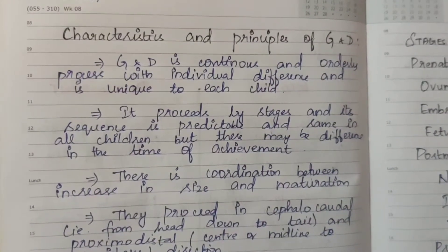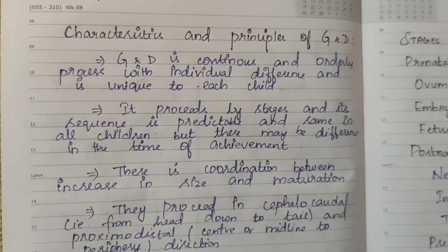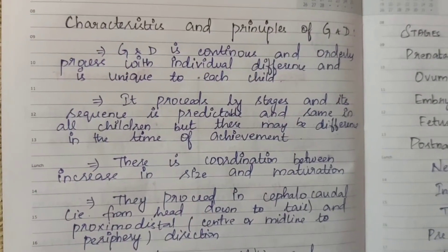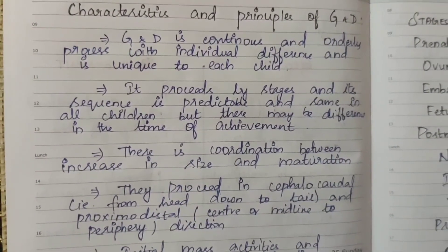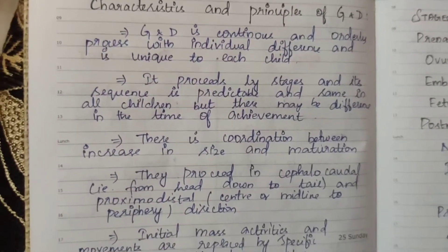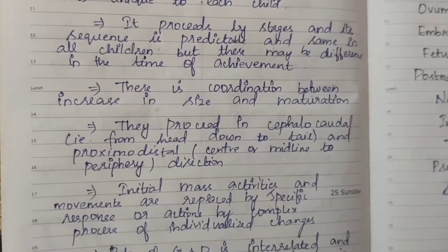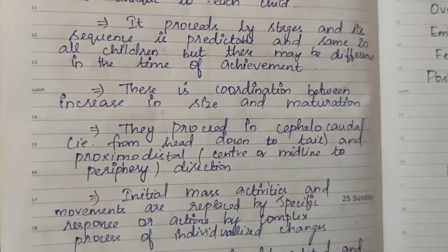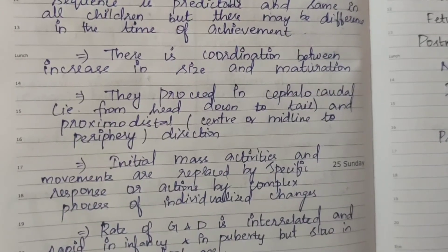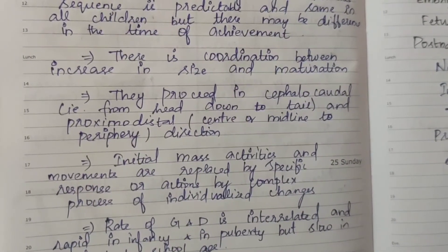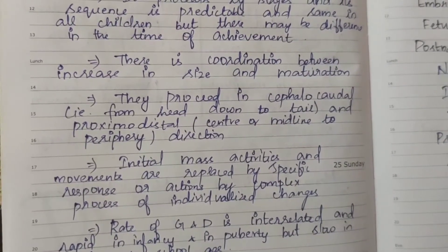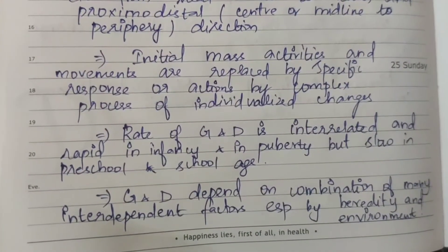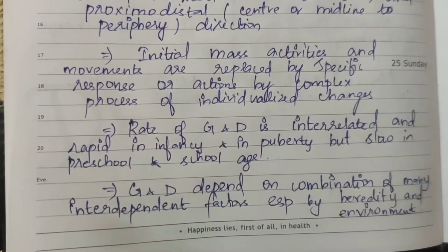Growth and development proceeds by stages and its sequence is predictable and the same in all children, but there may be a difference in the time of achievement. One child may attain a stage late, but the stage will be attained. There is coordination between increase in size and maturation. They proceed in cephalocaudal direction — that is from head down to tail — and proximodistal direction, that is from center or midline to periphery. Initial mass activities and movements are replaced by specific responses or actions through a complex process of individualized changes.